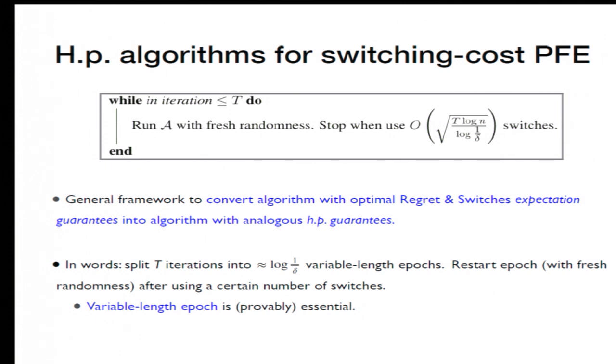So the variable length is actually provably essential, and the intuition for this is there are pathological algorithms which have optimal expectation guarantees, but have really bad tails. So if you're in an epoch and you hit this bad tail event and you don't end the epoch, you can pay so much that you'll be screwed for the whole game.